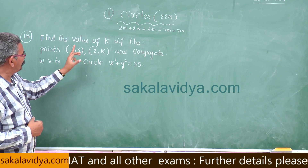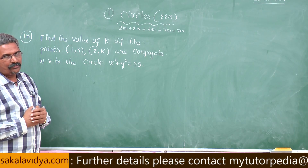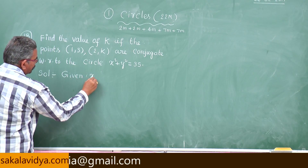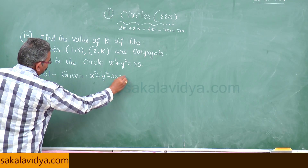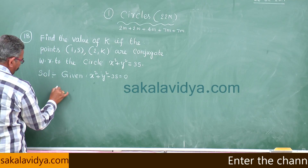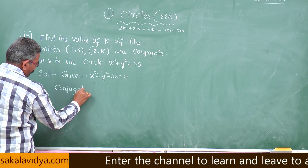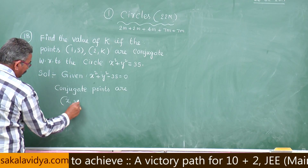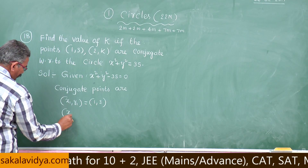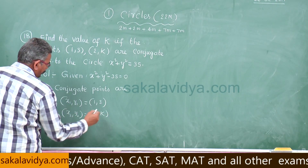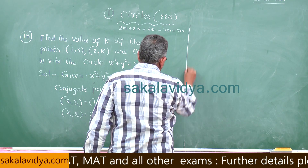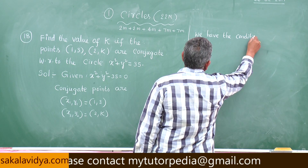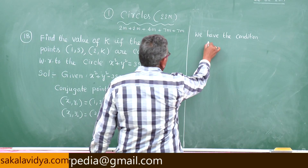Replace x₁ = 1, x₂ = 2, y₁ = 3, y₂ = k, and we get the value of k. Given: x² + y² - 35 = 0. Given conjugate points: x₁, y₁ = (1, 3) and x₂, y₂ = (2, k). Since these two points are conjugate, the condition s₁₂ = 0 must be satisfied.